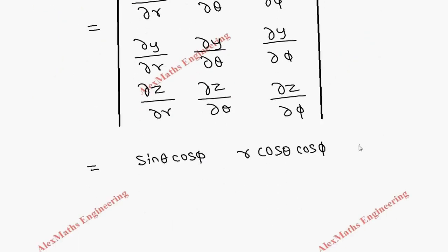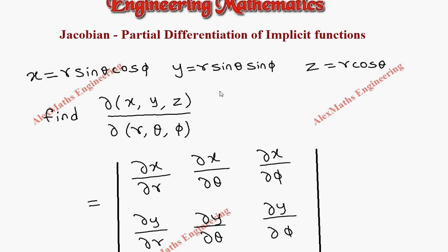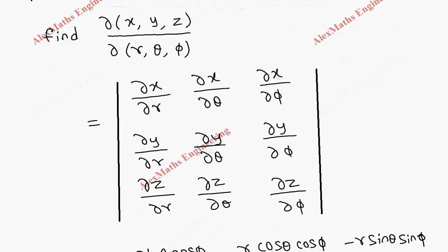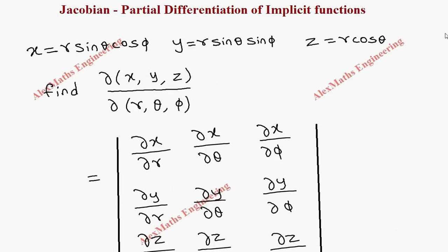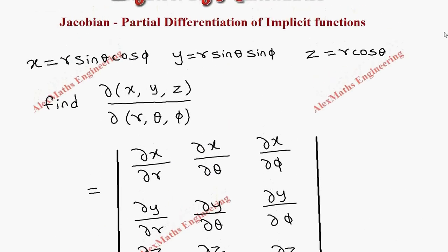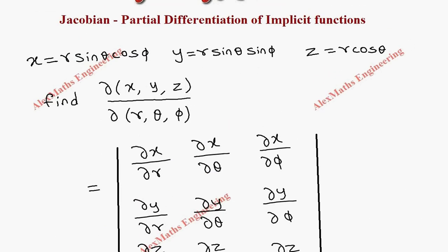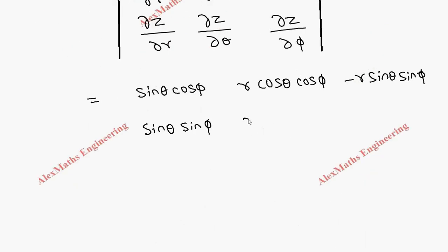For the second row, differentiating y with respect to r: sin θ sin φ are constant, so we get sin θ sin φ. With respect to θ: sin θ becomes cos θ, giving r cos θ sin φ. With respect to φ: cos φ appears, giving r sin θ cos φ.